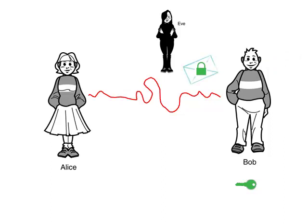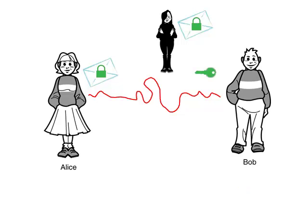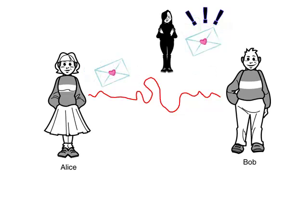So now Bob sends along the encrypted message. Alice gets it, and Eve gets it too. But she can't read it, because she needs the key to open it. The problem is, Alice doesn't have the key either. Bob has to find a way to send that key to Alice so Eve can't get it. Watch what happens if he tries to send it by the same channel. Alice gets the key, but Eve gets it too. So in the end, this didn't work.